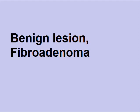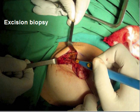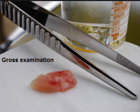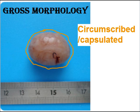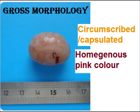So on cytology, the diagnosis of Fibroadenoma was given. She was advised for excision biopsy. Excision biopsy was done and the specimen was sent to the pathology lab. On gross examination, the specimen showed a small lump which is circumscribed, capsulated, and homogeneous, pink in color.